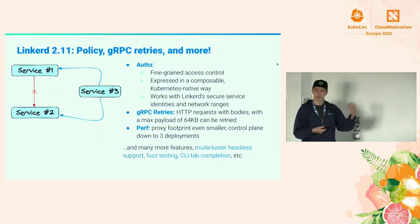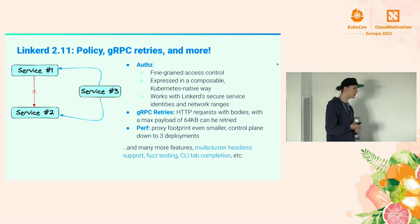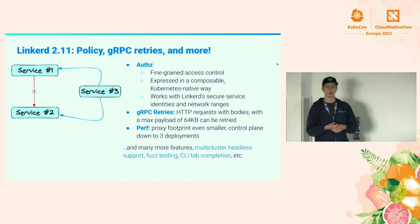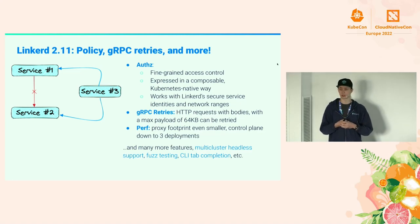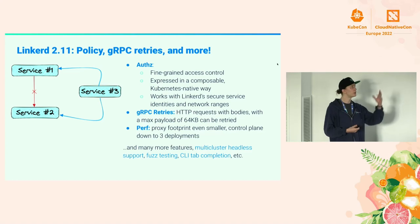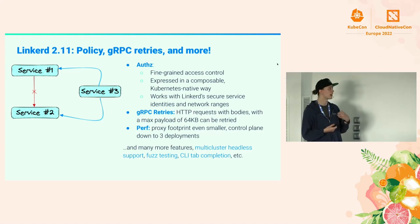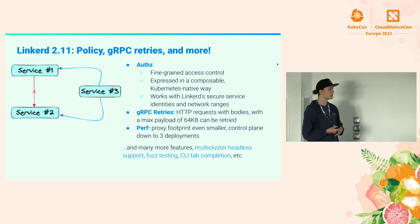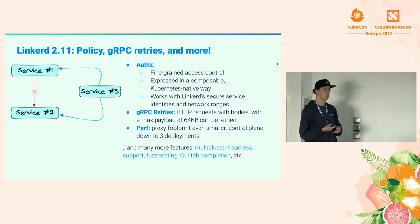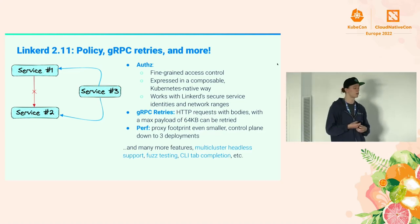Today we have Linkerd 2.11, which we released in autumn. What we focused on was policy. For Linkerd to truly be a security-conscious service mesh, we wanted to extend zero trust to your Kubernetes platform. We cannot have zero trust without authorization policies, so in 2.11 we focused on server-side policies — a fine-grained access control system that works in a composable way with Linkerd secure identities and also at a network range. You can describe a resource on your server that will allow you to accept traffic from specific identities, or deny certain subnets from connecting to your server.